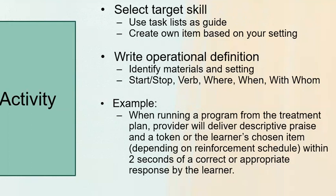For example, I could write: when running a program from the treatment plan, the provider or trainee will deliver descriptive praise and a token or the learner's chosen item, depending upon the reinforcement schedule, within two seconds of a correct or appropriate response by the learner. Now I have a very specific example of what I want my trainee to be able to demonstrate, and I can use this to see if they can do it. We're writing our operational definitions for our trainees just like we would for our learners, and then we can measure behavior change.